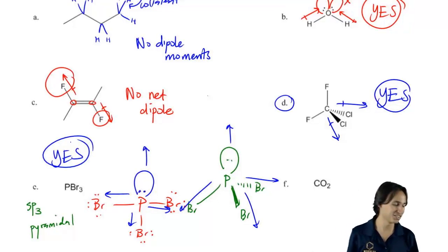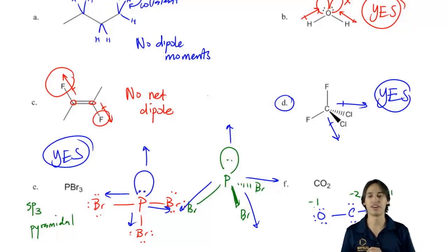CO2. This one hopefully is a little easier. C goes in the middle, O on one side, O on one side. I do lone pairs, and what I find out is that I'm going to have a negative 2 here, I'm going to have a negative 1 here, and I'm going to have a negative 1 there.